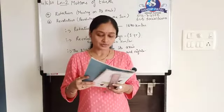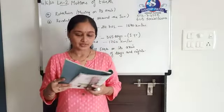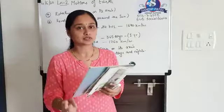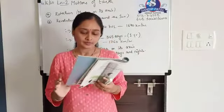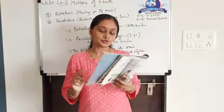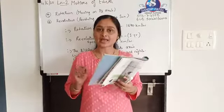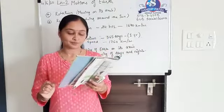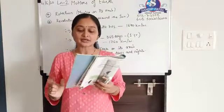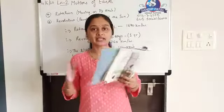The earth revolves around the sun at a speed of approximately 1760 km per minute. The earth makes an angle — when revolving around the sun, its axis is tilted at 23.5° and its orbit is at 66.5°. The earth is tilted, which means there will be variation in day, night, and season — varying lengths of day and night and seasons.